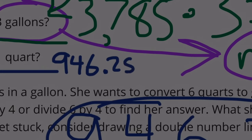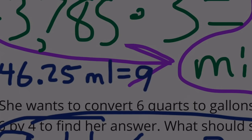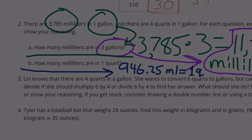So there's 946 and a quarter milliliters in a quart.